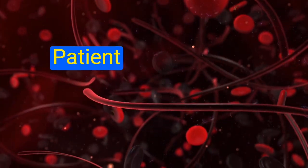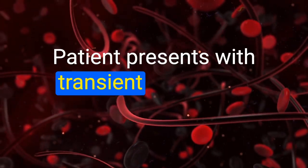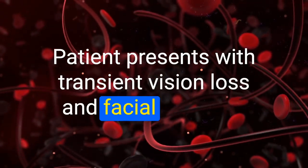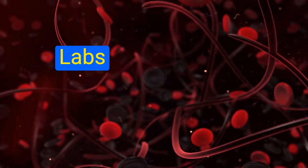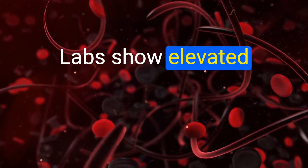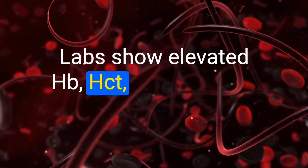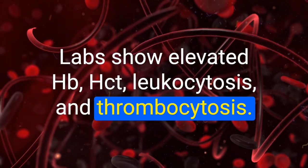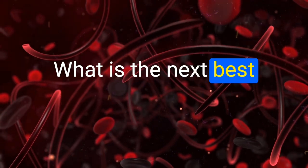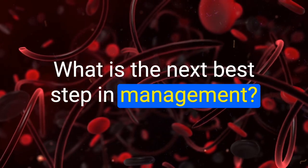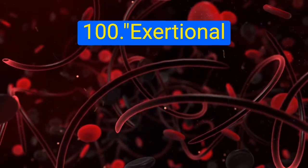A patient presents with transient vision loss and facial plethora. Labs show elevated hemoglobin, hematocrit, leukocytosis, and thrombocytosis. What is the next best step in management? Phlebotomy.